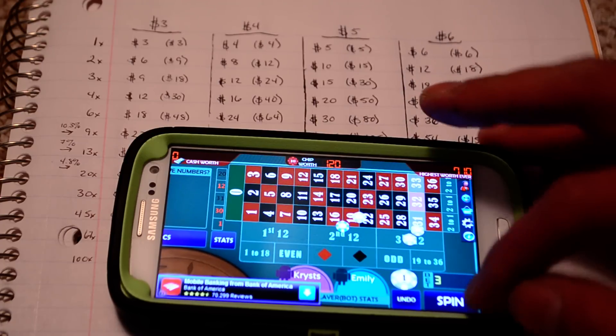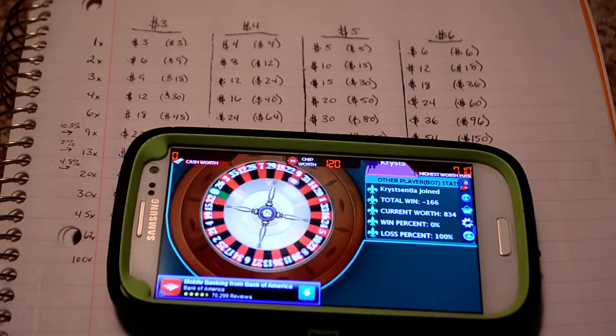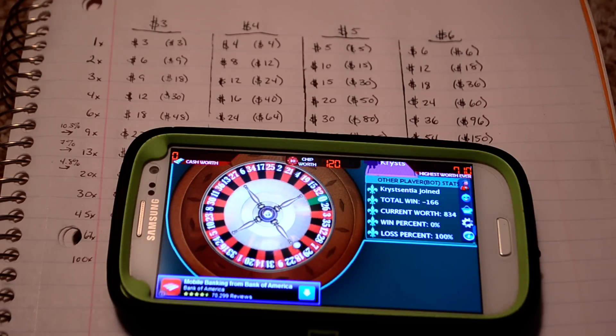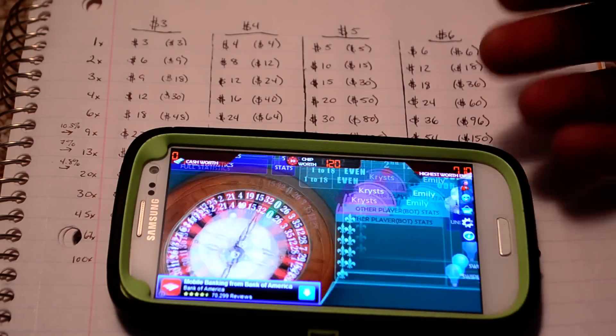Start over again. So I'll go with the third twelve. And I missed it, so I would double my bet. And that's basically what you keep doing.